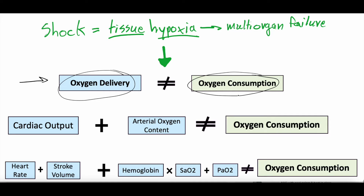Oxygen consumption can be measured and manipulated a little bit, but for the sake of this video, oxygen consumption is going to stay constant. Shock is tissue hypoxia — we're not able to deliver enough oxygen compared to what the tissue is consuming. So what is oxygen delivery? Well, oxygen delivery is just cardiac output — the amount of blood being pumped out of the heart — and the amount of oxygen in that blood, or the arterial oxygen content. Note that the pluses here aren't true mathematical additions; they represent proportional relationships. How much oxygen reaches tissue depends on how much blood is flowing there and how much oxygen is in that blood. But these still aren't clinically actionable, so we can break them down further.